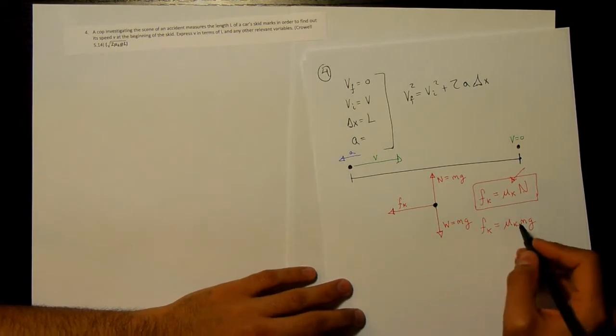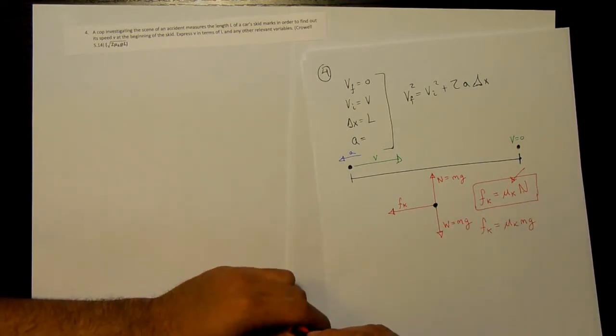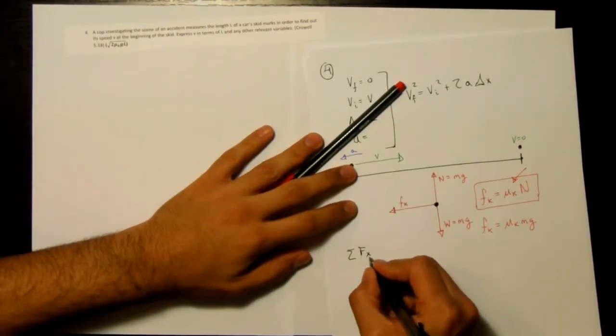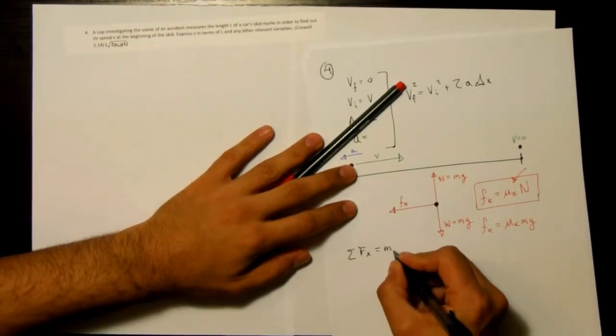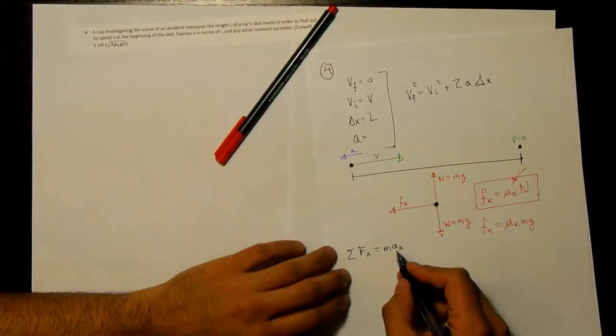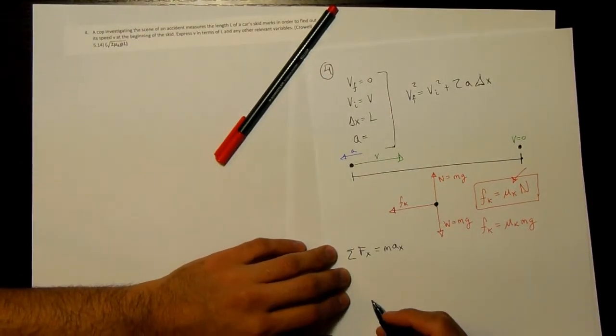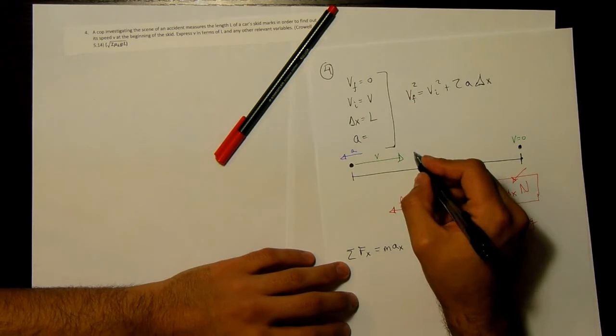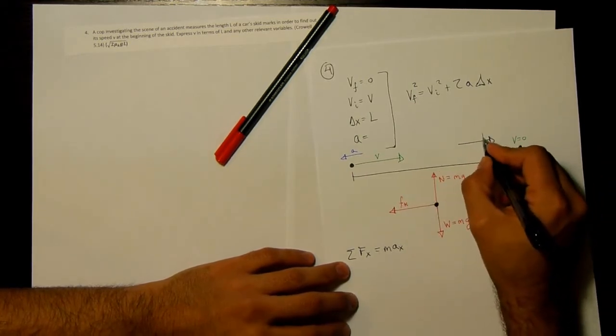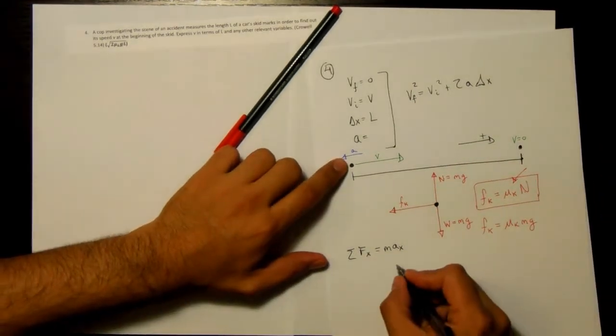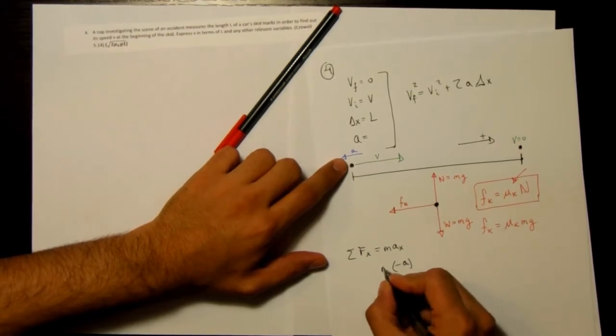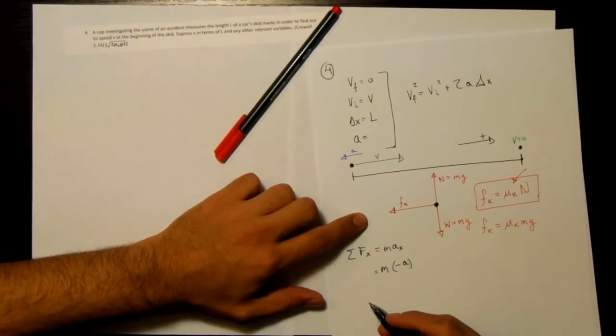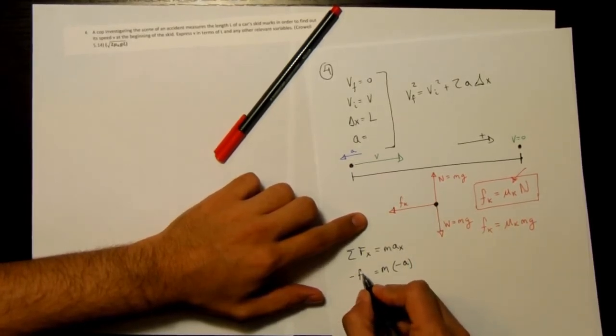And finally, if we consider the sum of forces in this direction, in the x direction. So I can say sum of forces in x is equal to mass times acceleration in x. Well, acceleration in x, I'm just writing it as a. And, you know, let's say we wanted to be very strict with the signs and we knew that this was positive direction. Then we can say, okay, well, my acceleration is negative a, really. That's a mass. And I only have one force in that direction. It's this fk, and it goes in the negative direction. So I'm going to write negative fk.